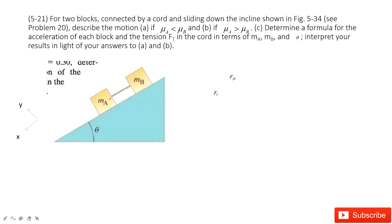The first situation is when the coefficient mu_A is smaller than mu_B. The second situation is when mu_A is larger than mu_B. First, we will look at the case where mu_A is smaller than mu_B and ask: what will happen?